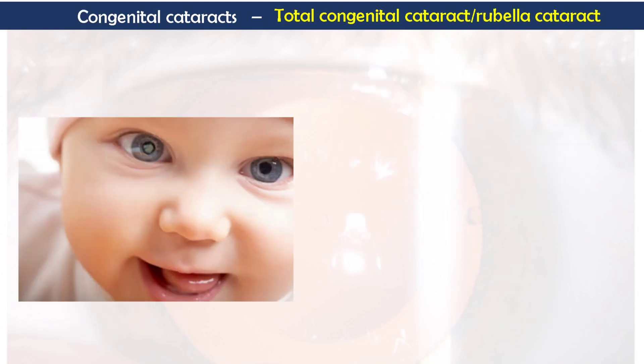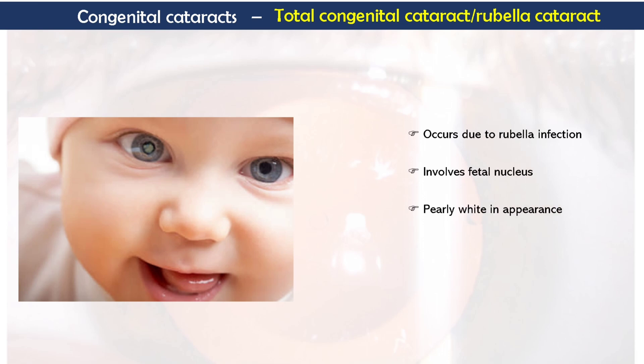Next is total congenital cataract, also called rubella cataract. It is caused by maternal rubella infection acquired during the first trimester, and the child is born with this cataract. It involves the fetal nucleus, has a pearly white appearance, and is a progressive type of cataract — if not extracted, it will progress with time. This concludes our discussion on congenital cataract. Next, we will discuss age-related or senile cataract in the upcoming video.